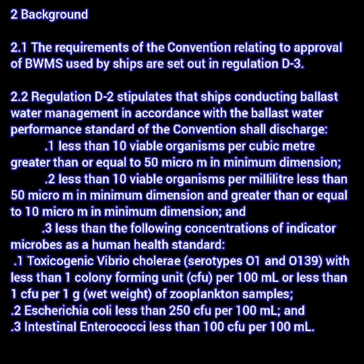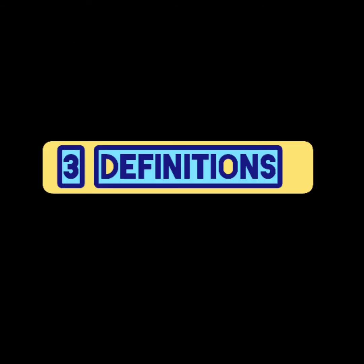As per the D3 standard, D3 is about the approval requirement for a ballast water management system. It also talks about regulation D2, which is about ballast water performance standard — basically the amount of organisms which must be present after treatment. In the background, D2 standards are repeated, such as 10 viable organisms per cubic meter greater than or equal to 50 micrometers in minimum dimension.